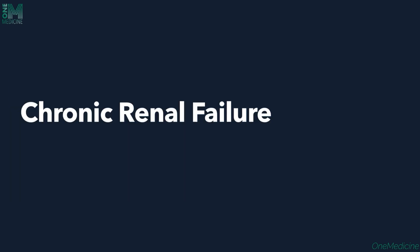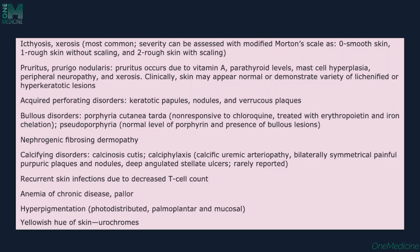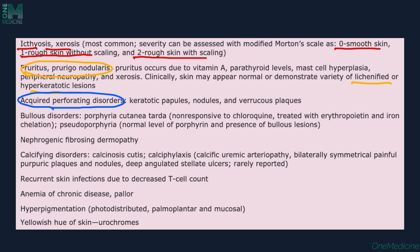Now coming to patients with chronic renal failure and their skin manifestations, the patient can present with ichthyosis and xerosis — dry skin is most common. Severity can be assessed with the modified Morton scale: 0 for smooth skin, 1 for rough skin without scaling, and 2 for rough skin with scaling. Patients can also have pruritus and prurigo nodularis, occurring due to vitamin A, parathyroid levels, mast cell hyperplasia, peripheral neuropathy, or xerosis. They may have lignified and hyperkeratotic lesions as well as acquired perforating disorders, where there is transepidermal elimination of collagen, keratin, or various other substances.